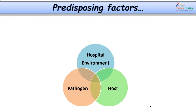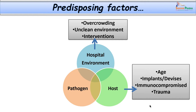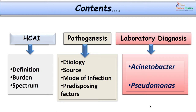Not all patients admitted to hospital develop infections. Predisposing factors include patient-related factors such as extremes of age, presence of implants or devices like catheters, immunocompromised status, and multiple trauma. Hospital-related factors include overcrowding and unclean environment. Pathogen-related factors include high virulence, multidrug resistance, pan-resistance, or the organism being a superbug.